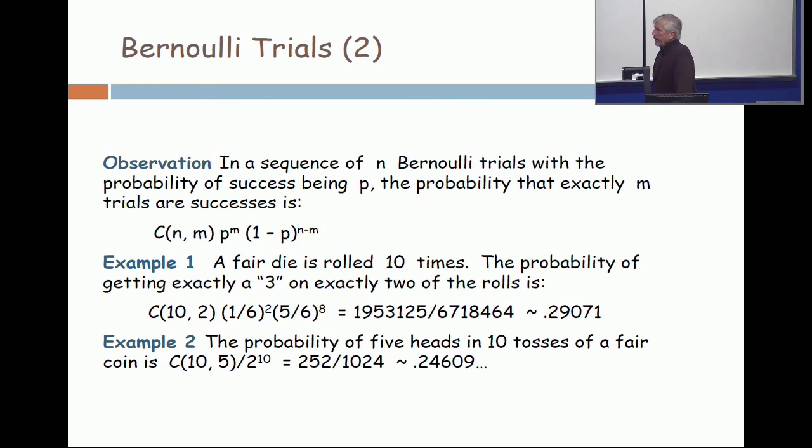I actually calculated that, and it's 1,953,125 over 6,718,464, and that's about 0.29071. Once again, my comment about big arithmetic is very applicable here, because I'm working with 10 rolls. If I did this problem with 100 rolls, the numbers are going to be huge.